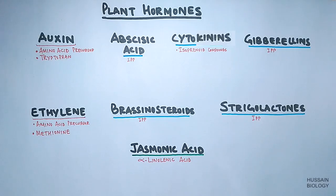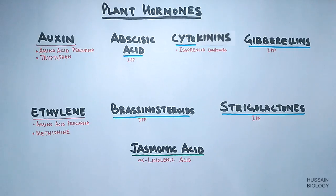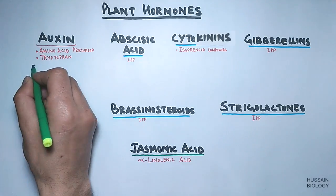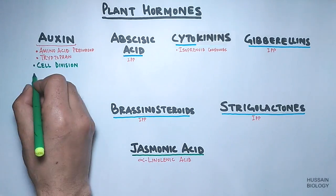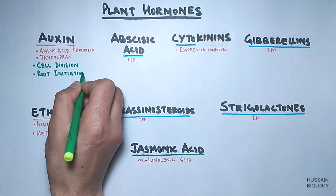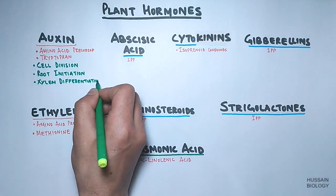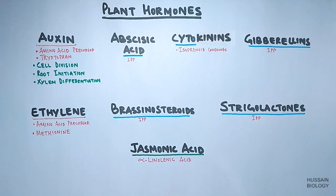Now let's see the functions of these hormones briefly — we will have an overview of functions, not going into detail. First, auxins have a role in cell division, root initiation, xylem differentiation, and various other functions.